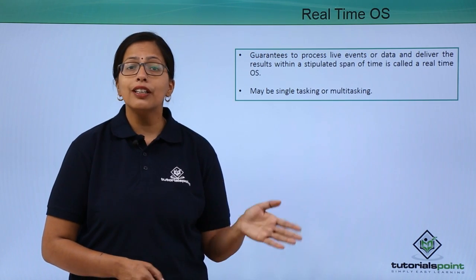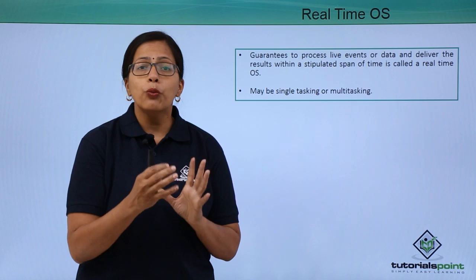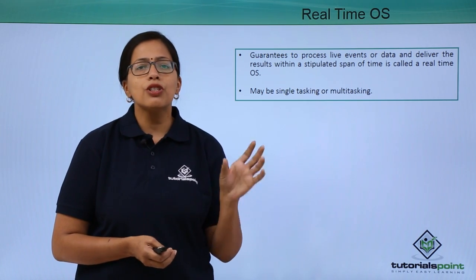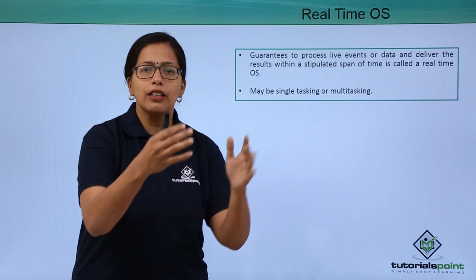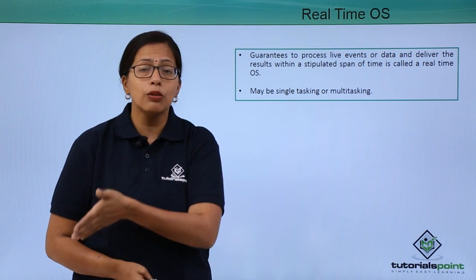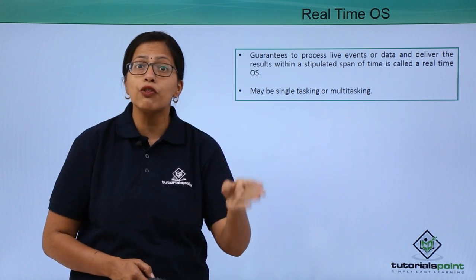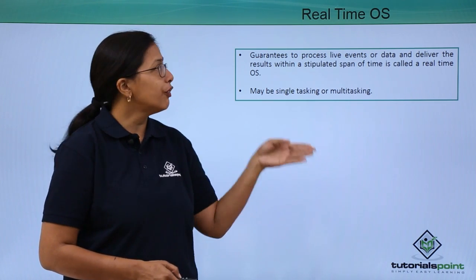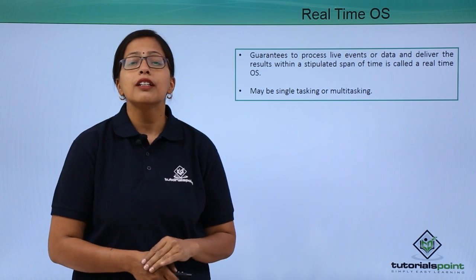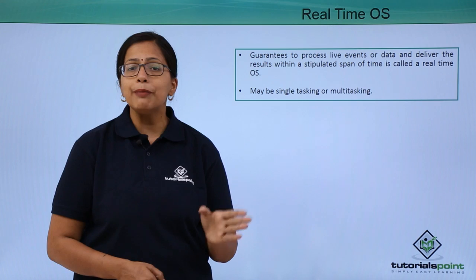Then we come to the real-time OS. Many functions in the real world today need real-time operation. For example, weather forecasting — if you go to Google and type the name of your place and its weather, immediately all the weather details appear. Someone sitting at a different place will get information about their own location. That is a real-time operation. A different type of operating system called the real-time operating system is used for this. It can be single-tasking or multi-tasking, meaning it can handle one job at a time or multiple tasks simultaneously.